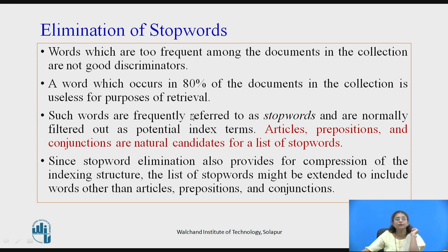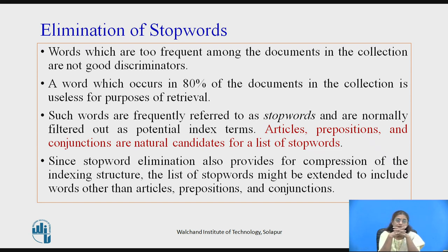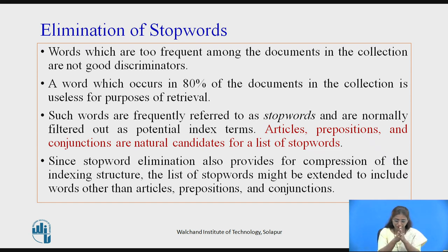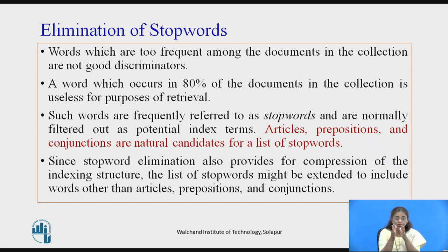Once the words have been generated, the next step is elimination of stop words. Which words are considered stop words? Words that are too frequent among the documents in the collection are not good discriminators. A word that occurs in 80 percent of the documents in the collection is useless for retrieval because all documents will be retrieved and that will not give you the specific documents you are interested in. Such words are referred to as stop words and are normally filtered out as potential index terms. Generally, articles, prepositions, and conjunctions are natural candidates for the stop word list.